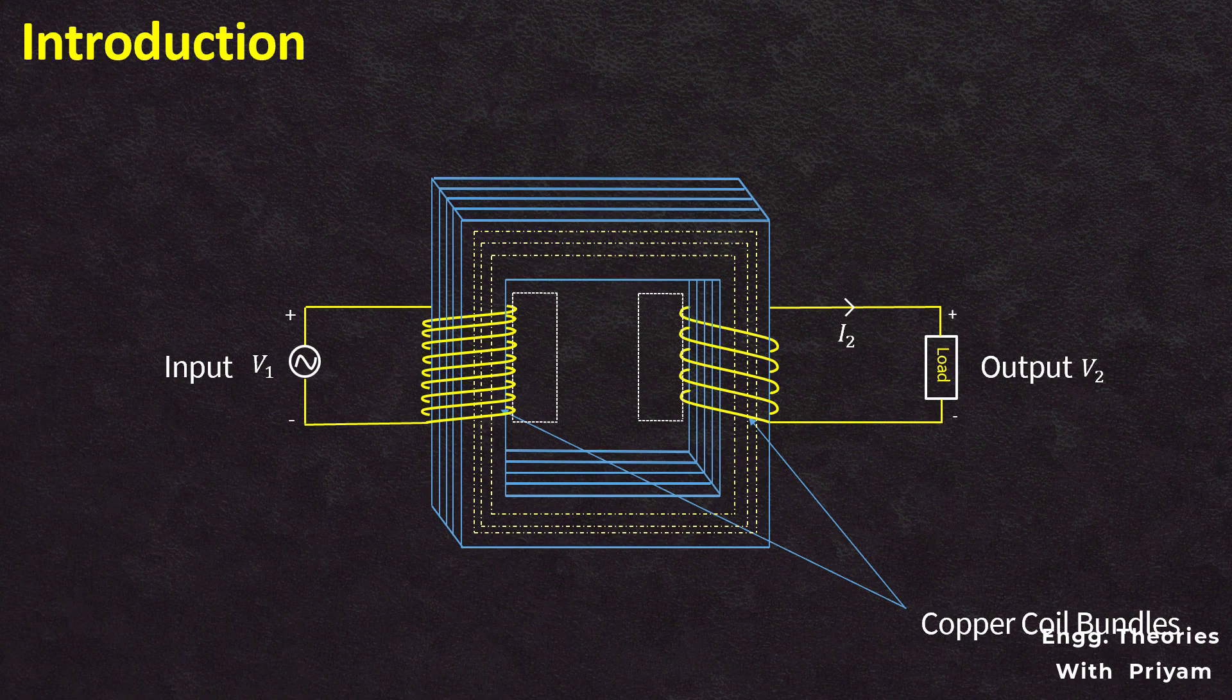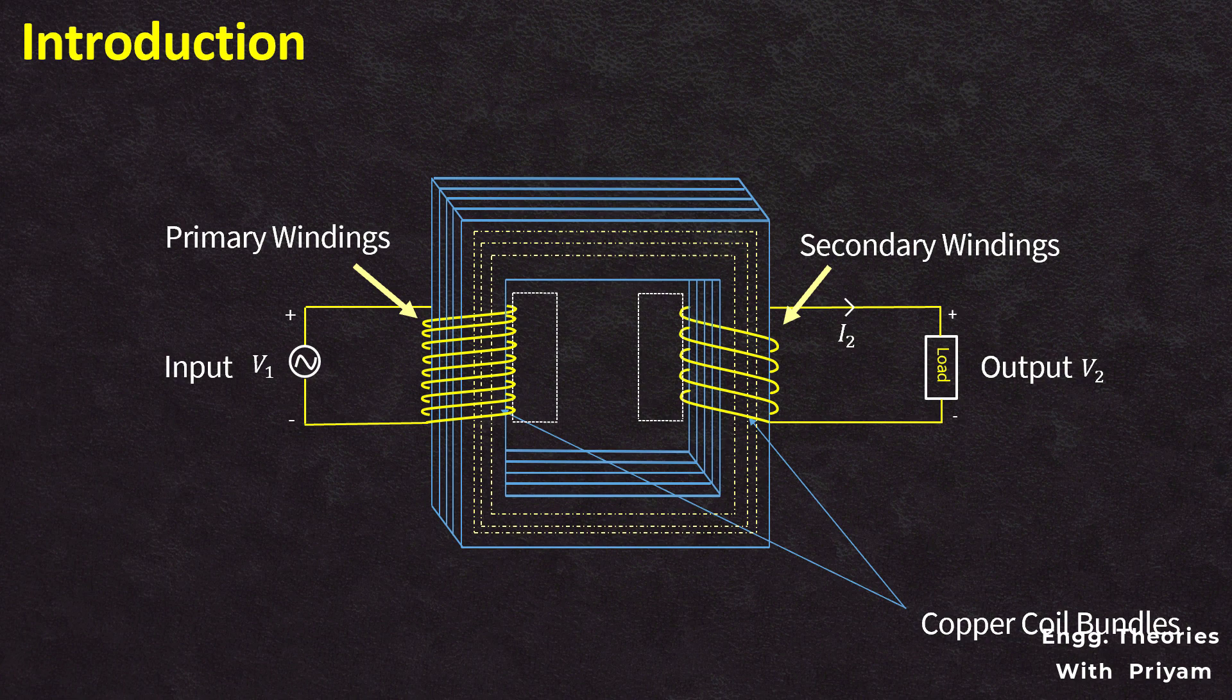Generally, in the transformer, we define the primary side as the side that usually takes power and the secondary as the side that usually delivers power. In a single-phase voltage transformer, the primary side is usually the side with the higher voltage. These two coils are wrapped around a single closed magnetic iron circuit known as the core rather than being in electric contact with one another.